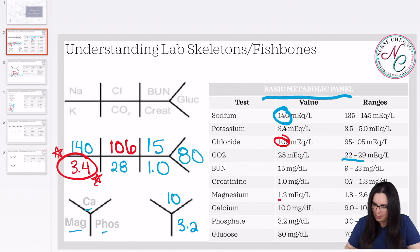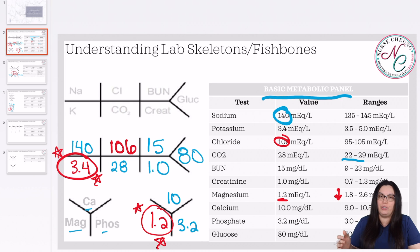But now we've got this magnesium here, which is 1.2. That's obviously lower than our 1.8 to 2.6. So again, this is going to key me in that I need to speak with my physician if I don't have a magnesium protocol set. And again, magnesium we usually replace until they are two.